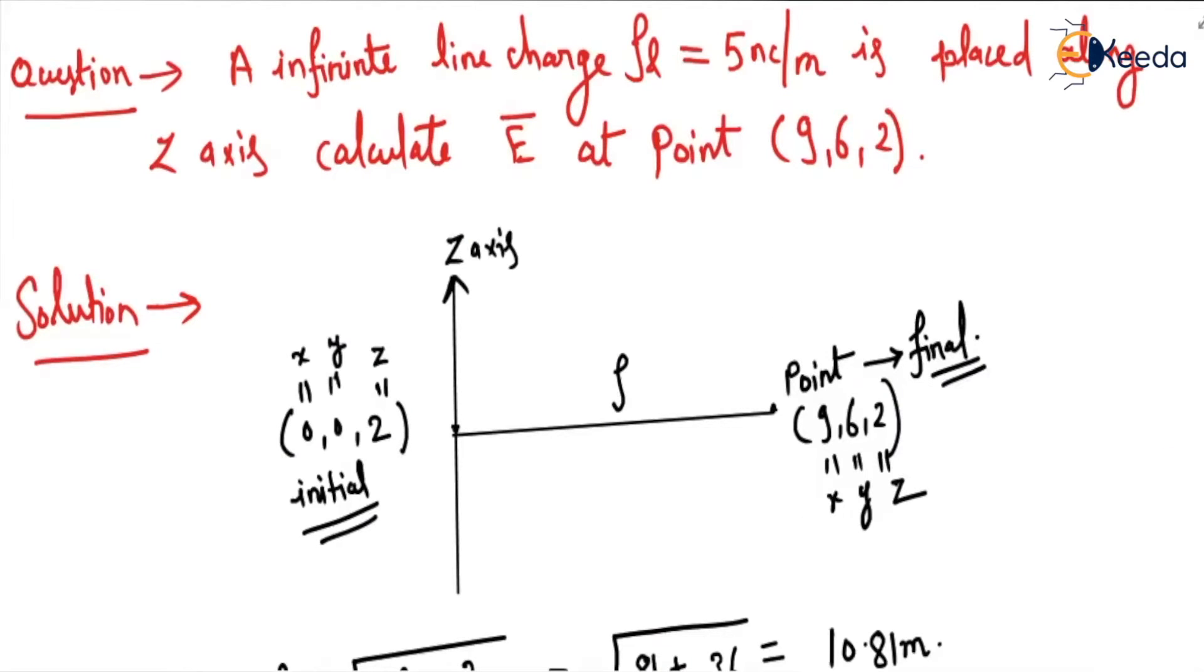So the numerical is: an infinite length line charge, rho_L equals 5 nanocoulombs per meter, is placed along the z-axis. Then calculate the electric field at point (9, 6, 2).